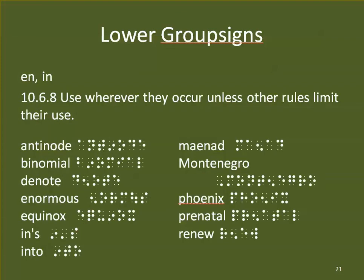EN and IN have special rules — we use them wherever they occur unless something else says we can't, so we'll see these much more than before. We'll see them in words like antinode, binomial, denote, enormous, equinox, ins (meaning in-apostrophe-s), into — we don't have the INTO contraction joined up anymore, but we can still use the IN contraction. Also Montenegro, Phoenix, prenatal, and renew. Those will look a little strange until we get used to this, but we can use EN and IN in those cases.